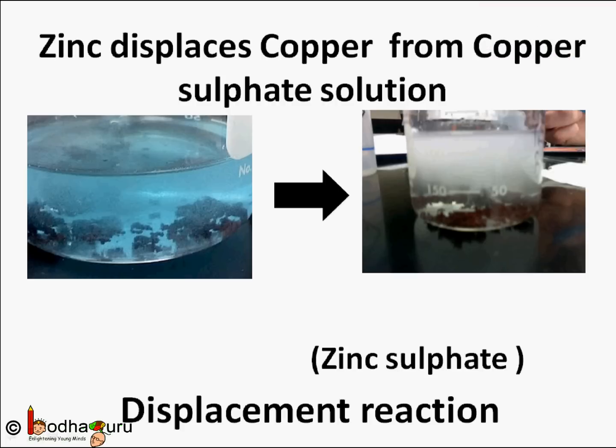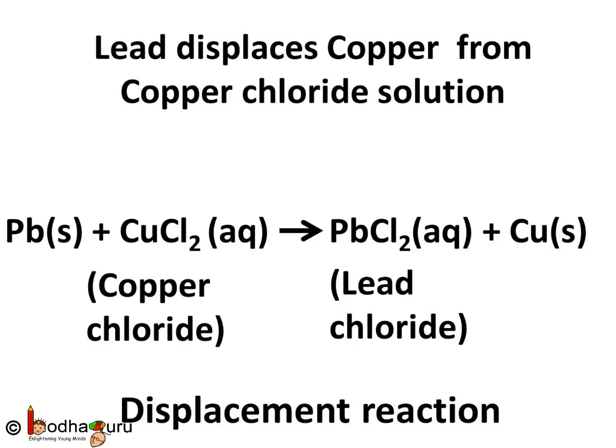Similarly, if zinc is added to copper sulfate solution, then zinc displaces copper. It means zinc will replace copper in the copper sulfate and zinc sulfate is produced. Also, when lead is added to copper chloride solution, then lead chloride is formed. In this reaction, lead displaces copper from the copper chloride, leading to the formation of lead chloride.